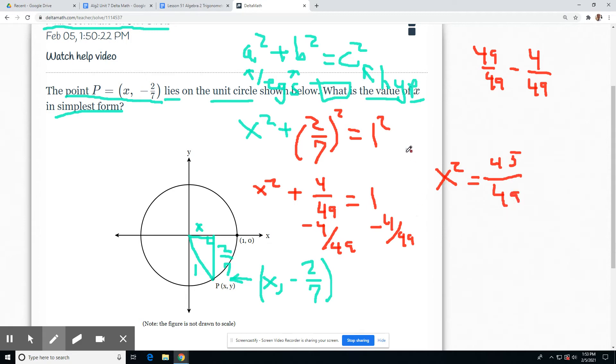Square root both sides. Undo the square. In my class, I always want you to do what when you undo a square? Plus or minus. That's always what we need when we undo a square. 45 over 49.